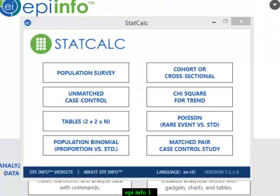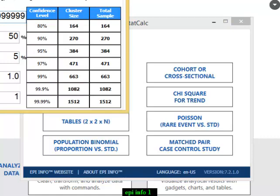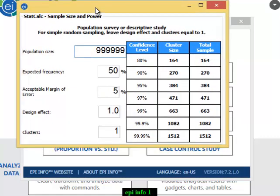We'll open our EpiInfo and choose population survey. Our estimated target was about 7000 pharmacists. The expected frequency was 50%. The acceptable margin of error was 5%, which was the alpha 0.05. As it was a simple random sampling, the effect size remains 1 and the cluster remains 1.